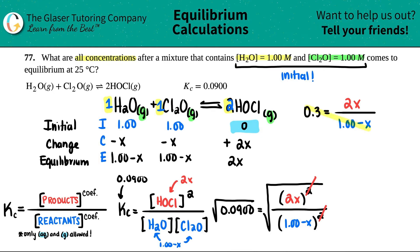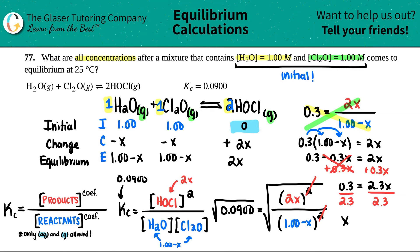So I get 0.3 equals - this is just 2x now, you're getting rid of the squares - divided by 1.00 minus x. That makes it so much easier. We're going to cross multiply: 0.3 times 1.00 minus x equals 2x. We'll do a little algebra. Distributing: 0.3 times 1 is 0.3 minus 0.3x equals 2x. Let's get the x's on one side, plus 0.3x.